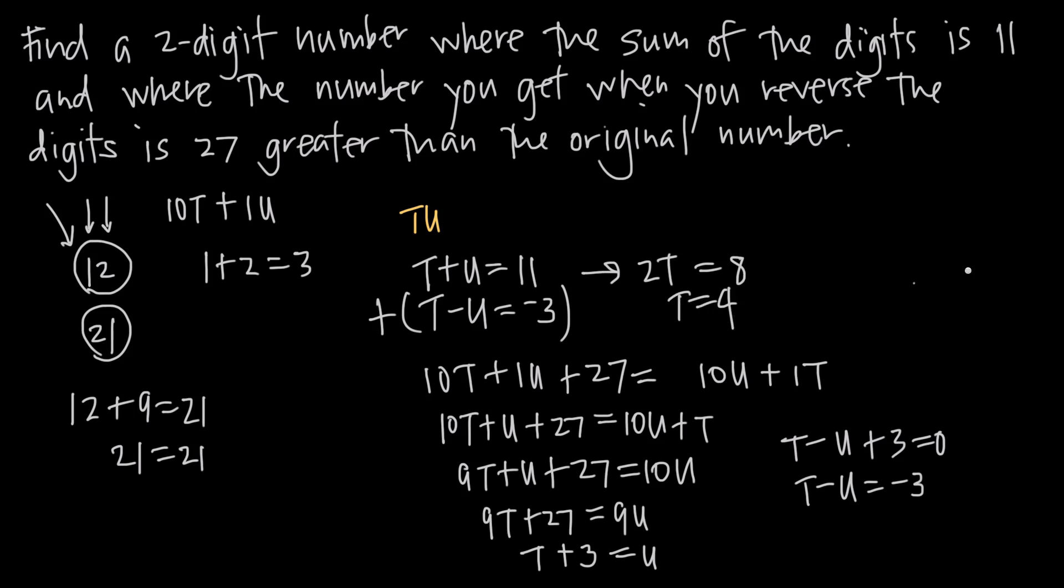Dividing both sides by 2, we get t is equal to 4. So now we have a value for t and we can plug this value for t back into this equation here to find a value for u. So when we plug this in, t equals 4, so we get 4 plus u equals 11. Subtracting 4 from both sides, we get u is equal to 7.